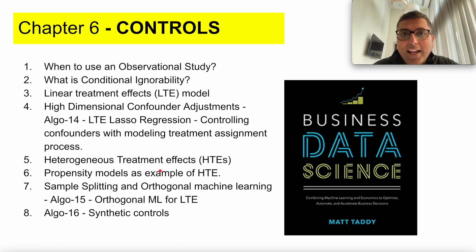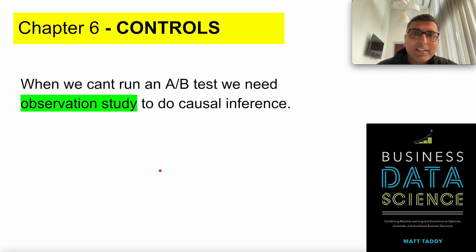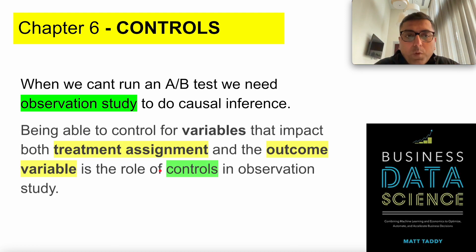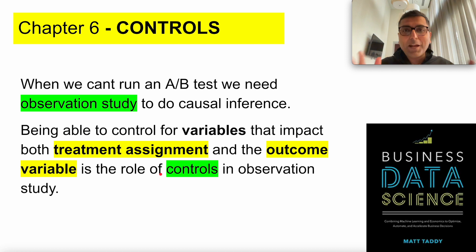If I were to summarize this entire chapter in one or two lines: when you cannot run an A-B test, we need observational study as a toolset to do causal inference. If we want to use observational study, we need to be able to control for variables that impact the treatment assignment and the outcome variable — the response variable. That is the role of controls in observational study.